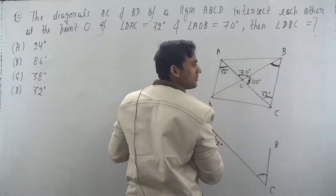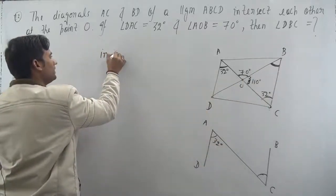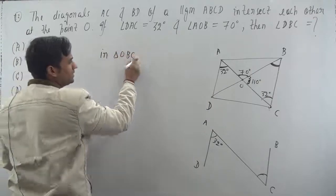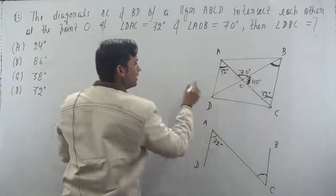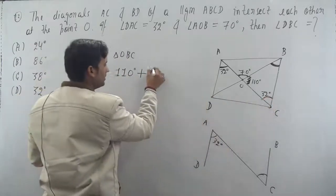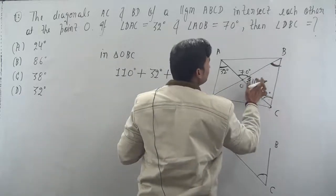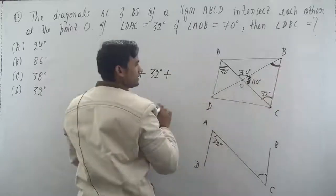Now in triangle OBC, angle sum property laga du. In triangle OBC, this is 70, this is 110 degrees. So 110 degrees plus, this is 32 degrees, so 32 degrees plus, this angle is angle DBC. Correct.